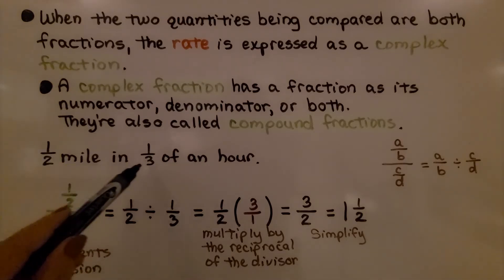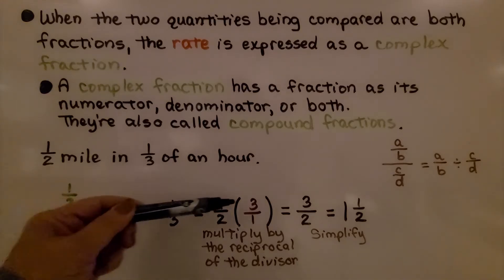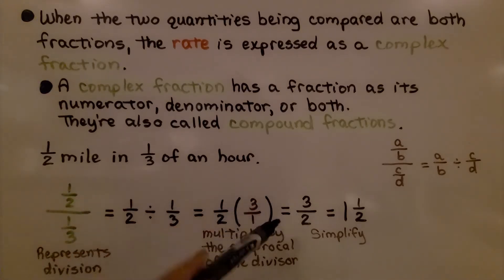If we have one half mile in one third of an hour, we can write it as a complex fraction and do one half divided by one third. That's going to be equal to one half times three over one because we multiply by the reciprocal of the divisor. Multiplying straight across, we get three over two. We can simplify that to one and one half. So we know they can go one and a half miles in one hour.